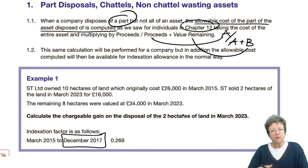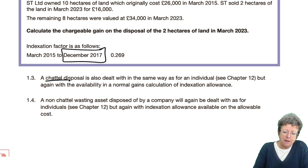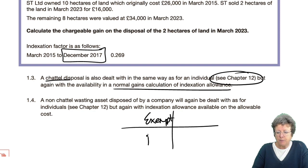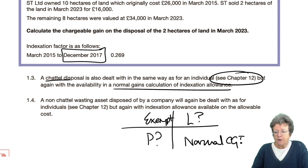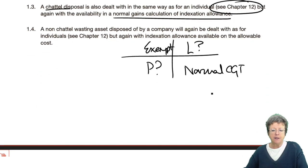It might be worth stopping now, doing it yourself, and making sure that you get the same figures. Don't forget, indexation cannot create a loss. Chattels are exactly the same as they are with individuals. In the individual section, we had exempt situations: what happens if you make a profit, what happens if you make a loss, and normal CGT. I'm not going to do any questions here because there's plenty of questions in that chapter that deals with chattels.